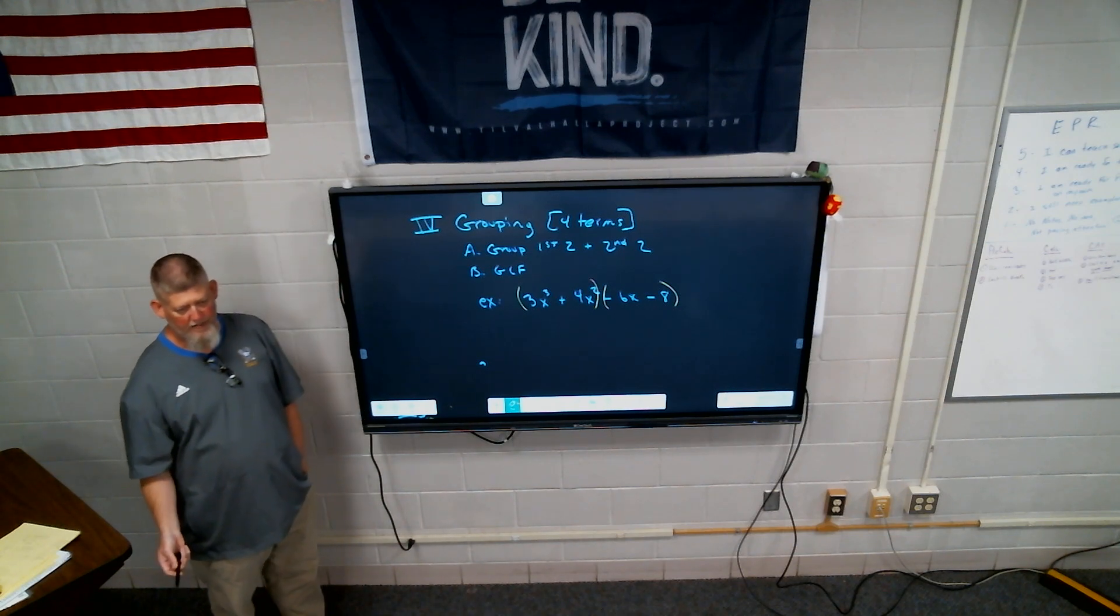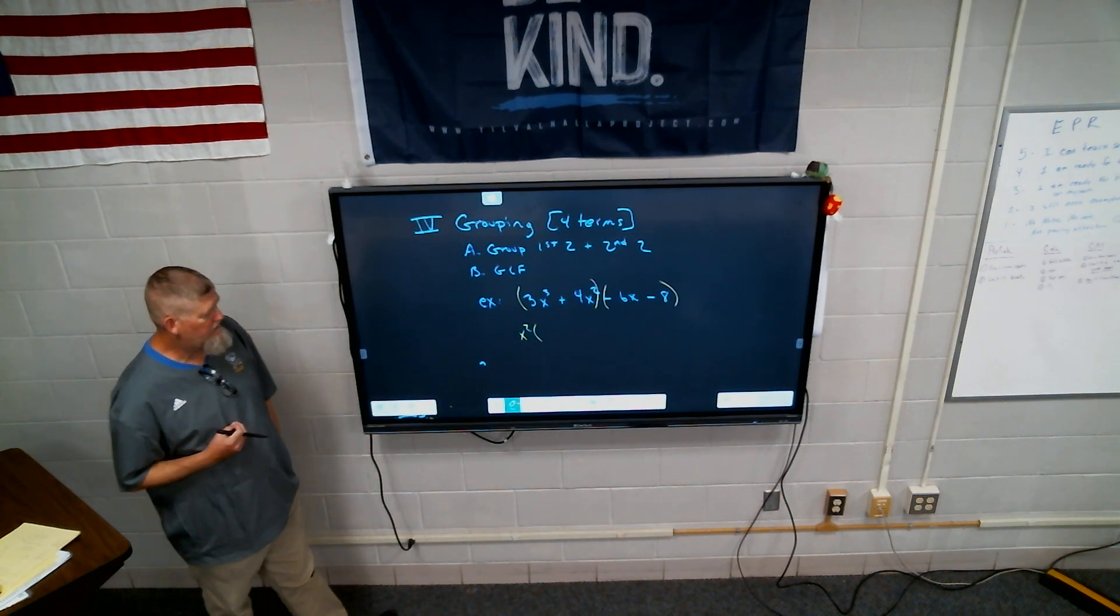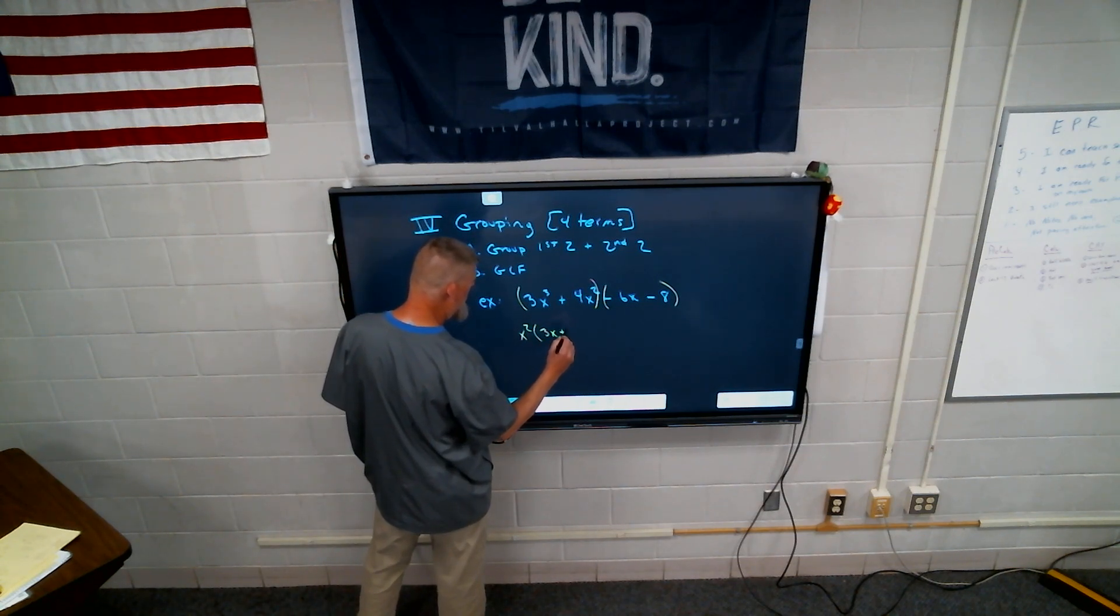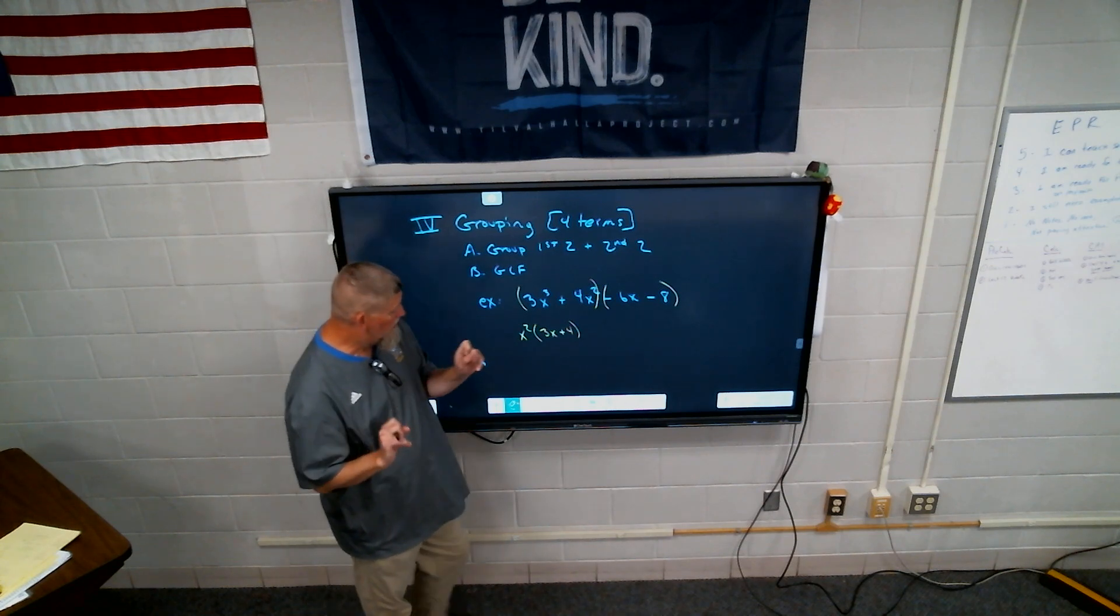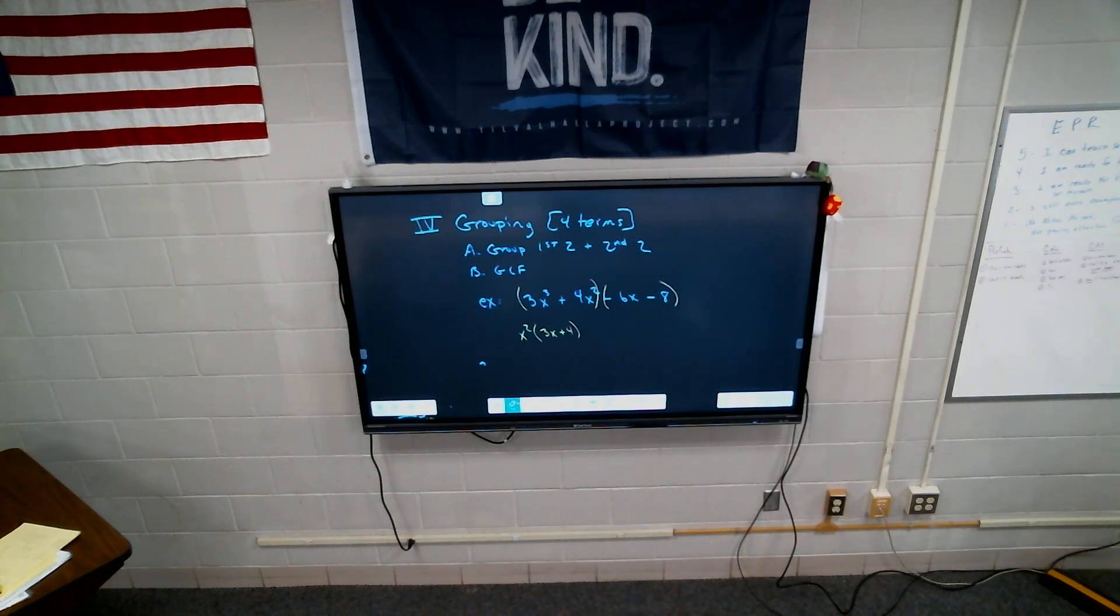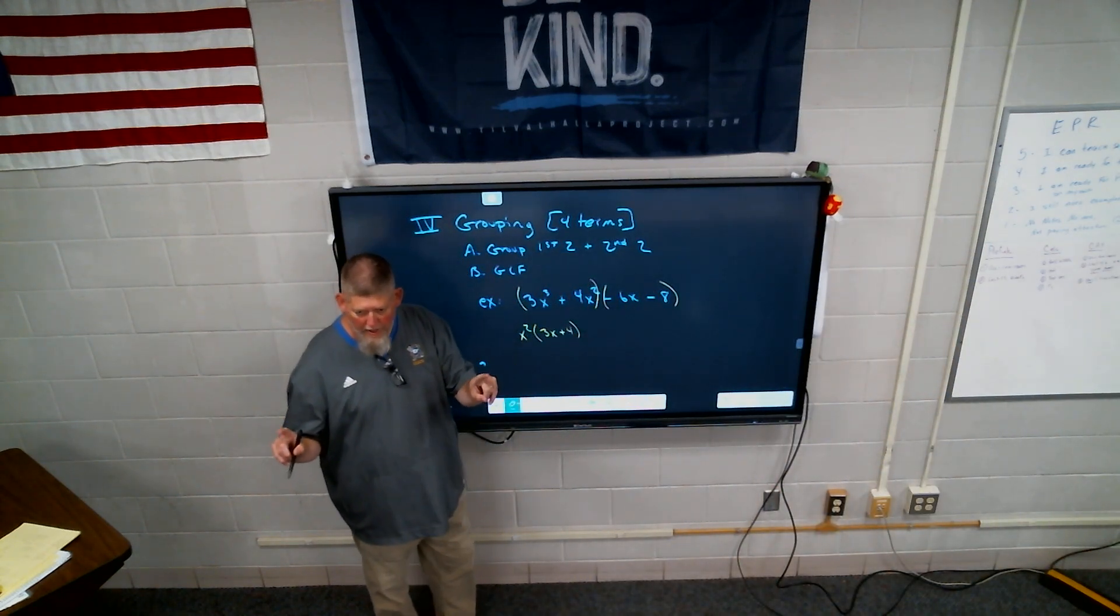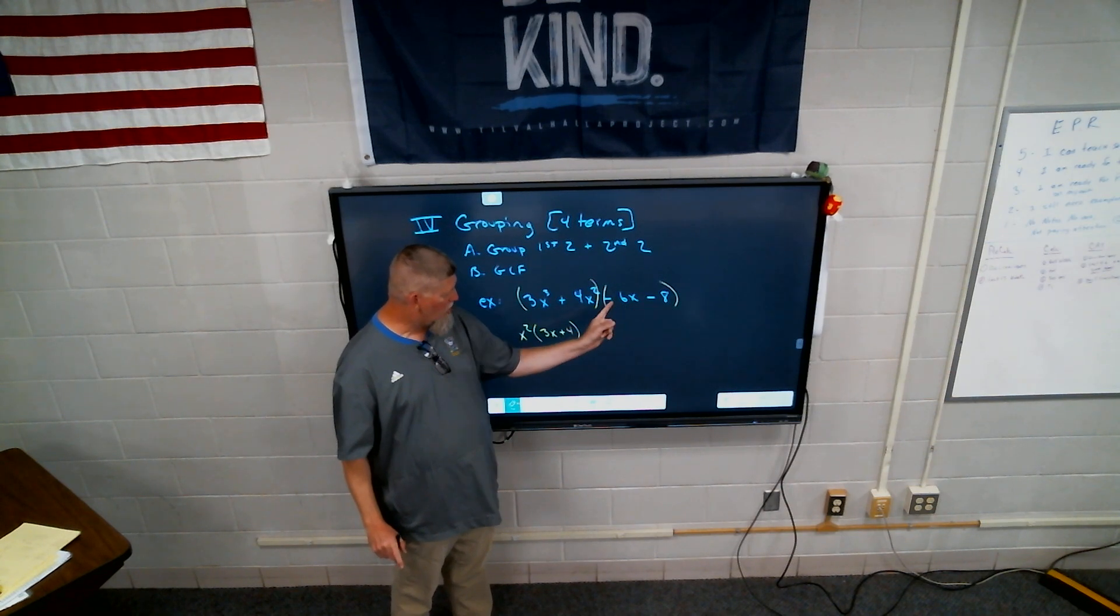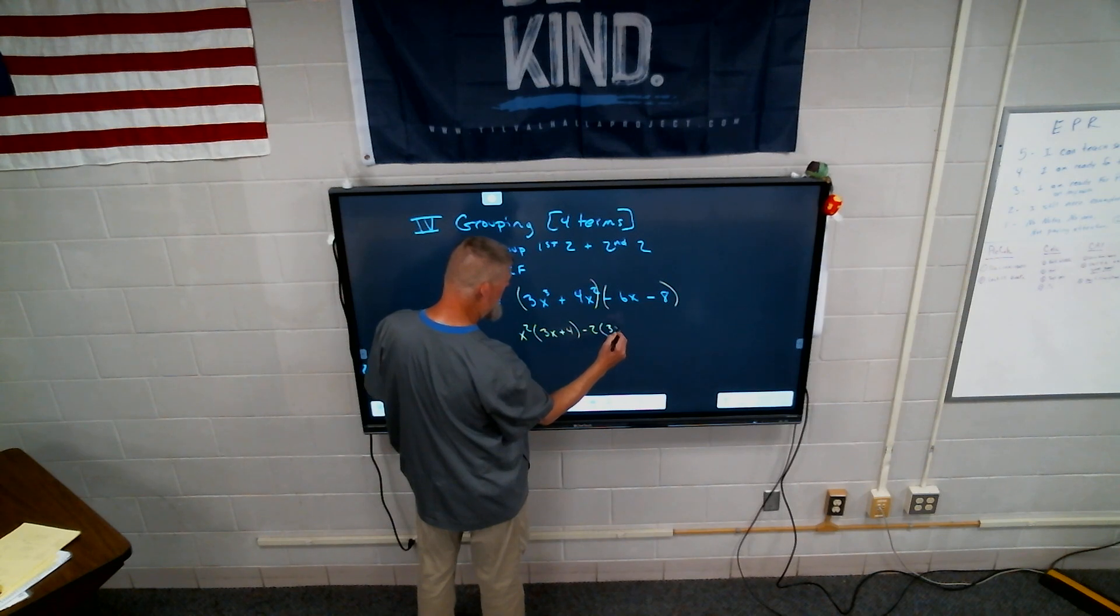So what does 3x cubed and 4x squared have in common? x squared. So if I bring out and factor x squared out just the first two, what do I have left? 3x plus 4. Yes. What does negative 6x and negative 8 have in common? 2. So here's just a little rule too. When this third term is a negative, it doesn't matter what sign this is, always bring that negative out. So in this case, let's take out a negative 2. So then what would I be left with? 3x. I take a negative out of the negative 8, it becomes positive 4.